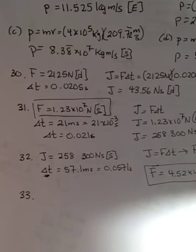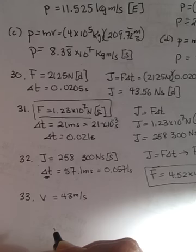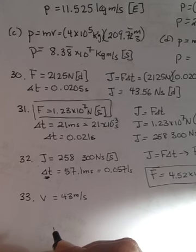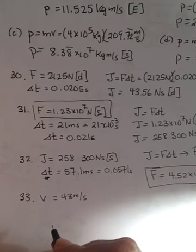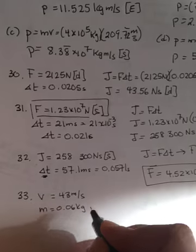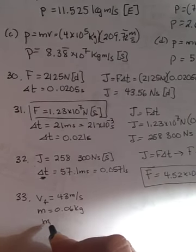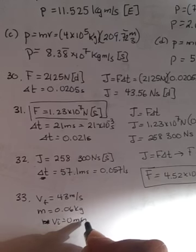All right, number 33 over on 203. The velocity of a serve of some professional tennis players has been clocked at 43 meters per second. Horizontally, the tennis player strikes the racket. The mass of the ball is 0.06. So M is 0.06 kilograms. And it wants to know what is the impulse. And we're going to assume this is the final. And it started at zero. It's always good if it's not moving.